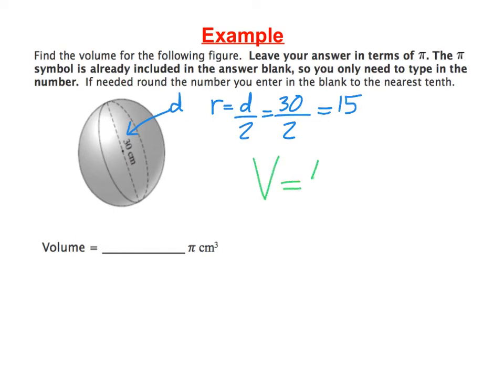Volume equals 4 pi r cubed divided by 3. Then we just go ahead and substitute our numbers in. So we have 4 pi that stays the same. And then our radius is 15. And then that whole thing is divided by 3.